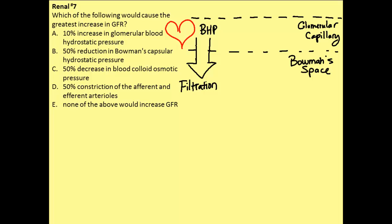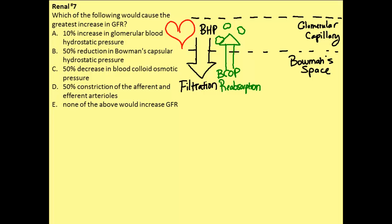The other major pressure is due to the large molecular weight proteins that are retained in the glomerular capillaries, because they are too large to pass through those endothelial cell clefts. These proteins create an osmotic pressure which attracts fluid back into the glomerular capillaries, and that is called the blood colloid osmotic pressure. This pressure promotes reabsorption, or the movement of fluids from Bowman's space back into the glomerular capillary.